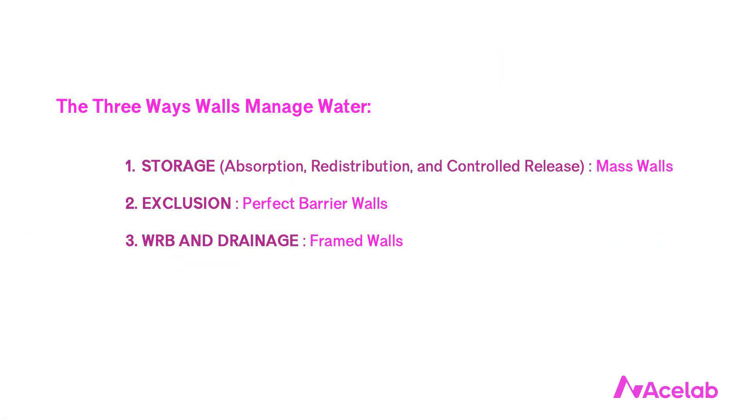To understand how windows manage water is to understand the concept of the two-stage seal. It's most helpful to introduce this concept in the context of walls. There are three different ways that walls can manage water: the storage approach, the exclusion approach, and the WRB and drainage approach.